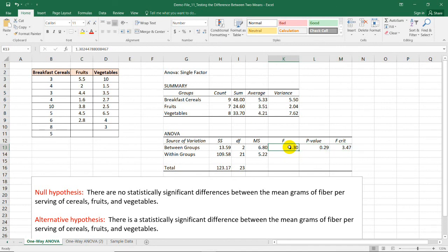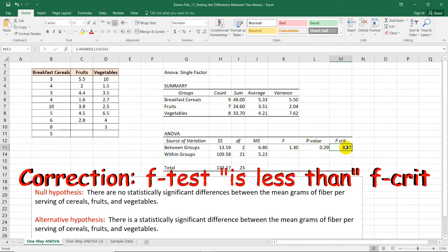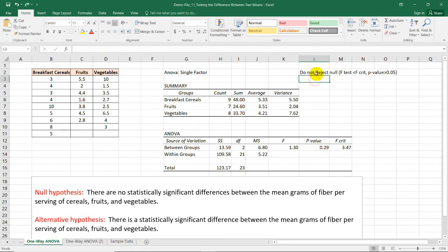Since the P-value is greater than the 0.05 level of significance and the F-test is less than the critical value, we need to retain the null hypothesis. So, our decision is do not reject the null hypothesis.